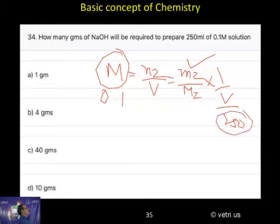It is given already sodium hydroxide, we know it is 40. So, all values are known. M2, you have to calculate. What is the answer to the question number?